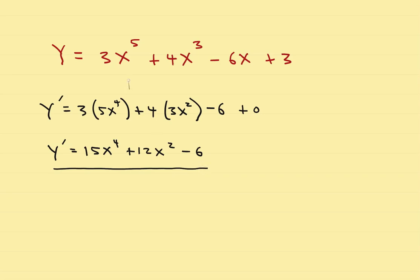If you want to, you can skip the middle step: 5 times 3 is 15, and 4 times 3 is 12. That's another way of doing it. Let's go to the next problem.